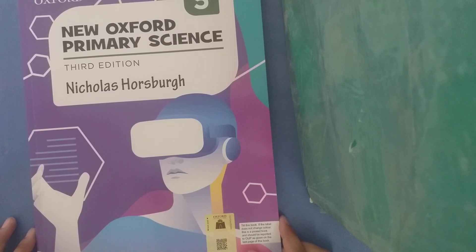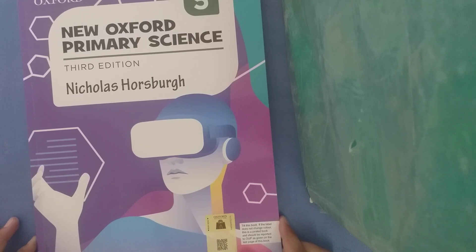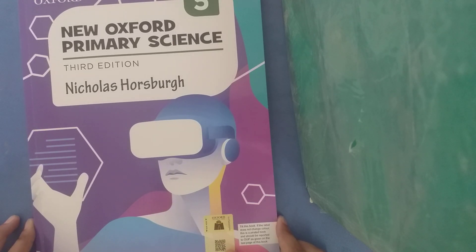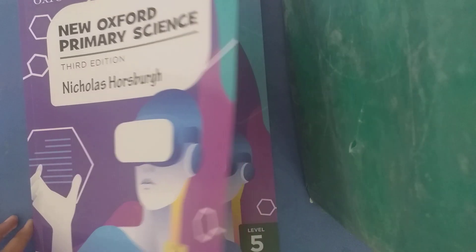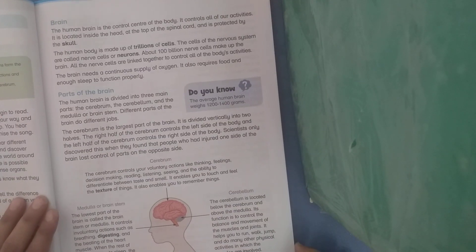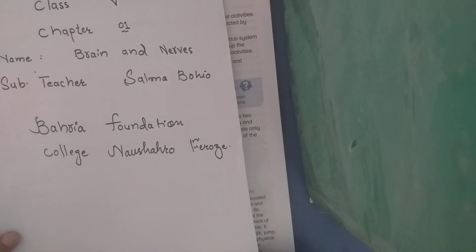Assalamu alaikum dear students, welcome to class 5 and this is your general science class 5 book which has been changed. The name of the book is New Oxford Primary Science, 3rd edition. This book consists of about 14 chapters. The name of the first chapter is the Brain and Nerves. Here is your teacher Ms. Salma Boyog from Beheria Foundation College Naushaero Feroz.